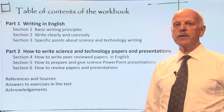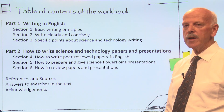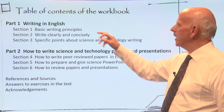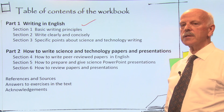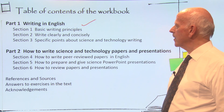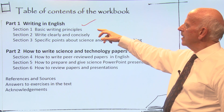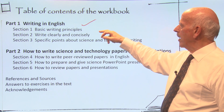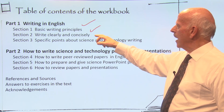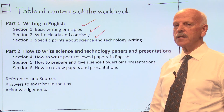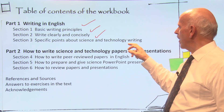Here is the table of contents of the workbook. It's divided into two parts: writing in English, and how to write scientific papers and presentations. The writing in English part is itself divided into three parts: basic writing principles, how to write clearly and concisely, and some special points for science writing.